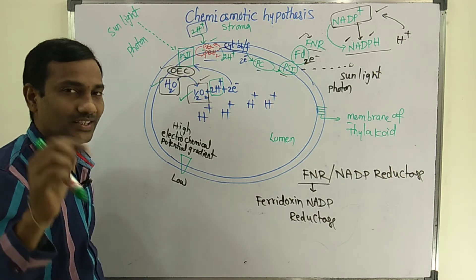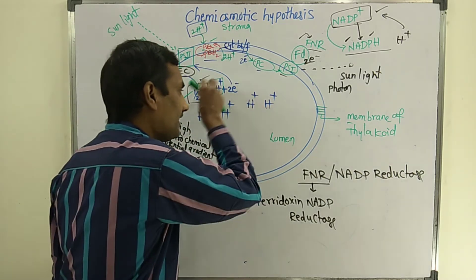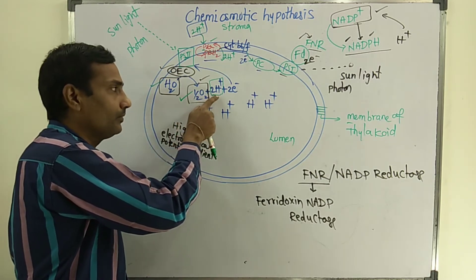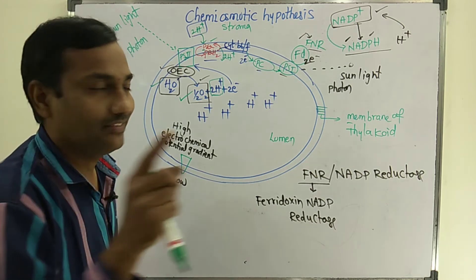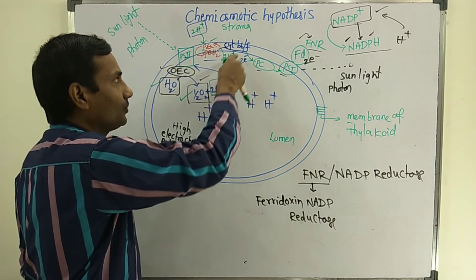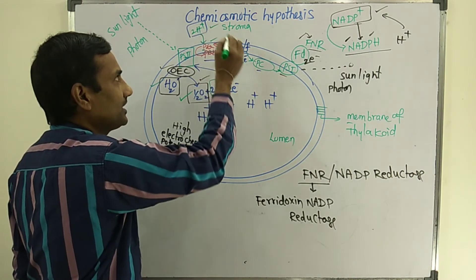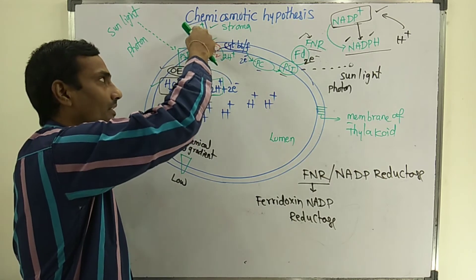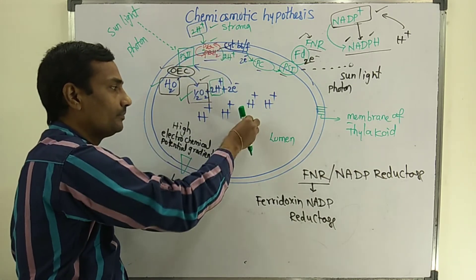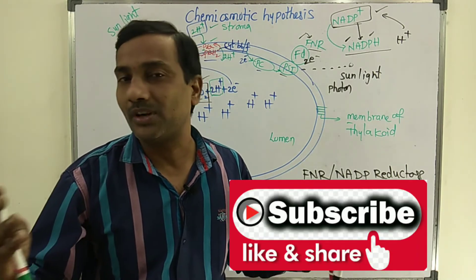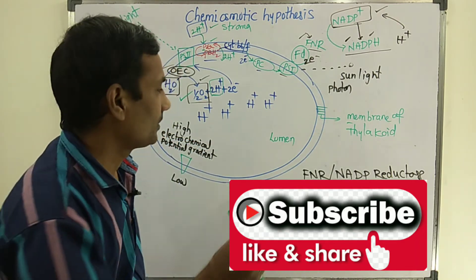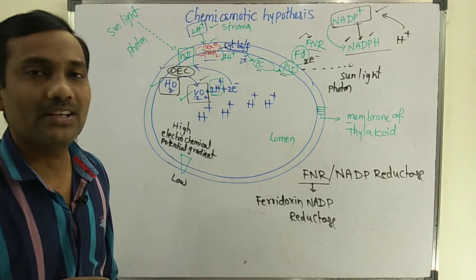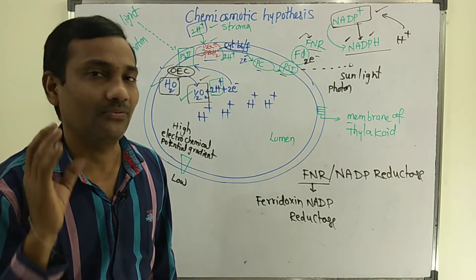So there are two reasons for accumulation of protons inside the lumen: first, splitting of water leads to formation of protons; second, the plastoquinone cycle helps translocation of protons from stroma to lumen. Gradually, the number of protons inside increases. These protons come outside through specialized channels — otherwise known as F0, F1 particles — which are embedded in the membranes of the thylakoid.